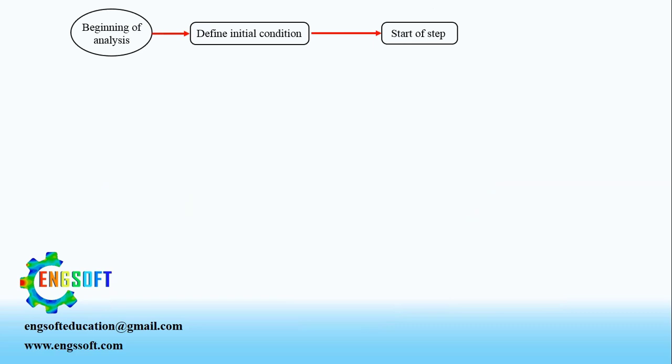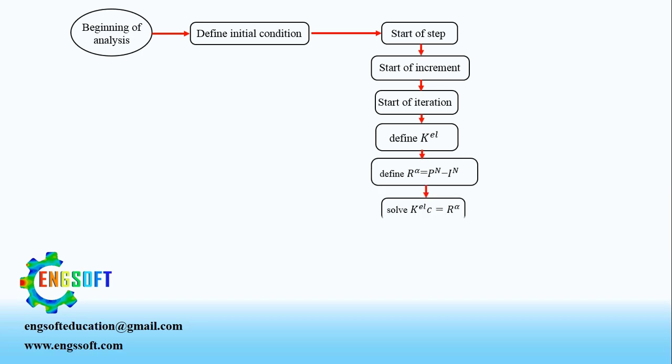At the beginning of an analysis, initial conditions such as boundary and loading conditions and also interactions are defined. In the first iteration of the first increment, Stiffness Matrix is assembled. Then, Static Equilibrium is solved using Newton-Raphson method.